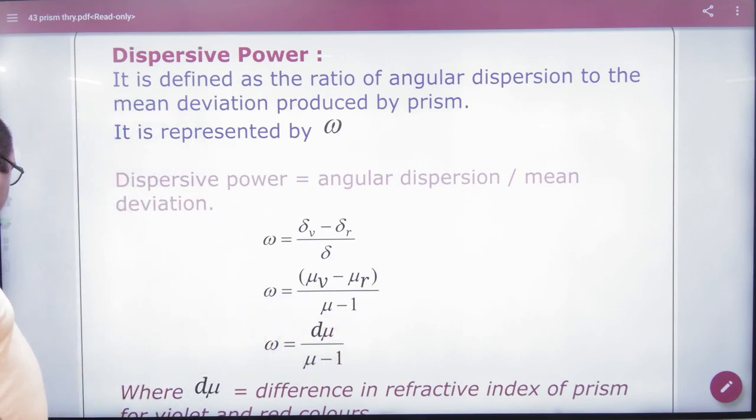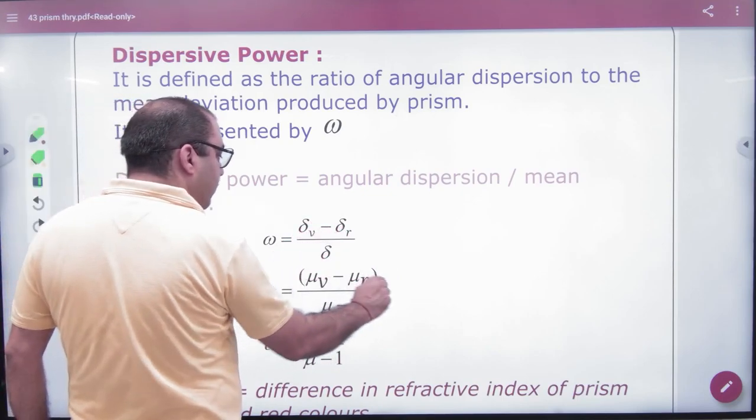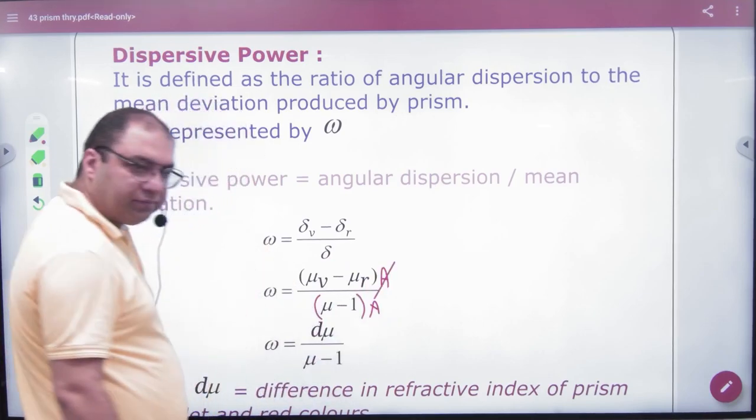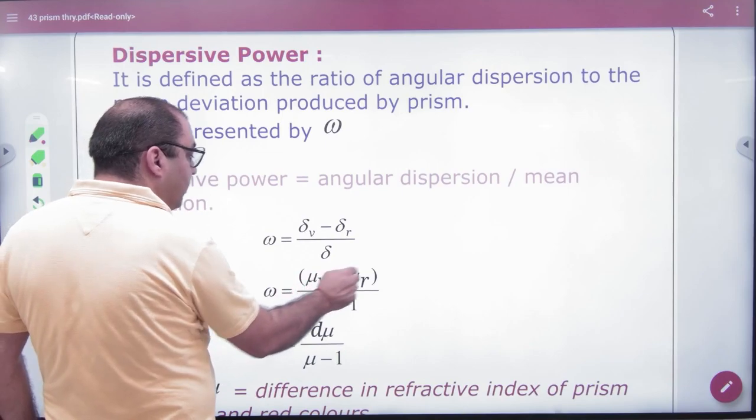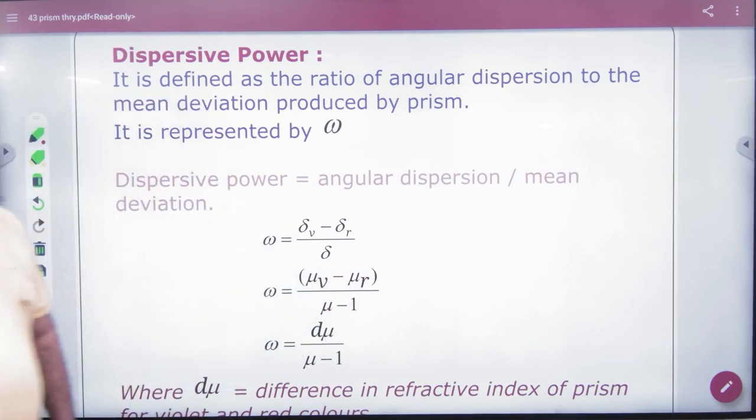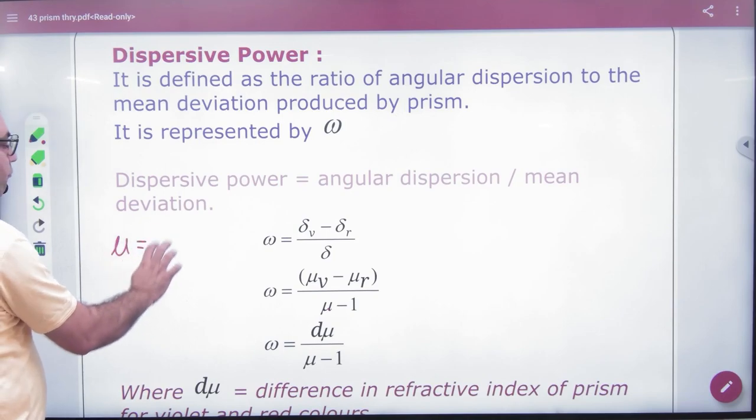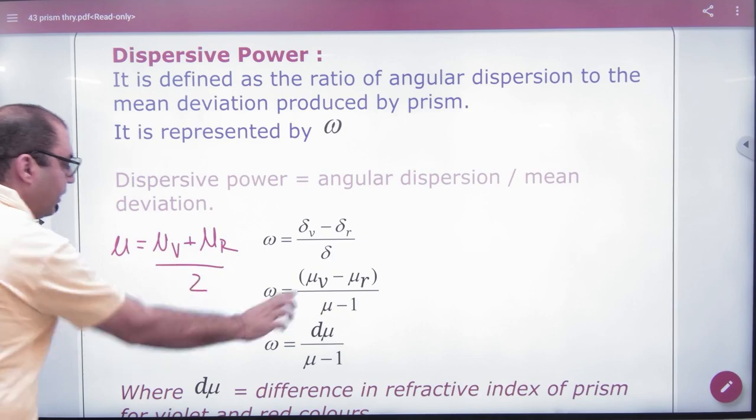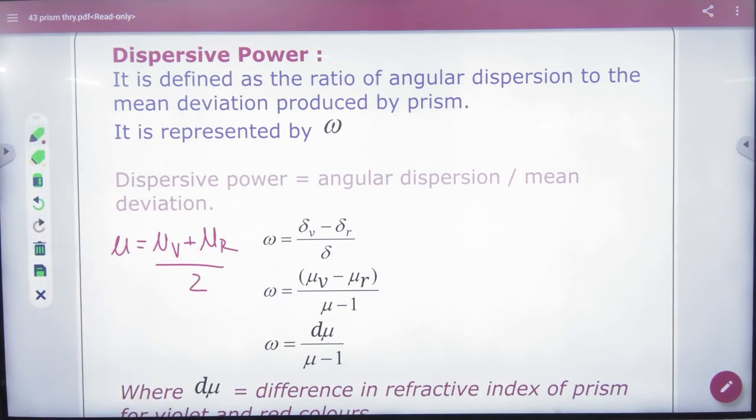Cancel because you can put it here in the denominator. So mu violet, this is mu average. Violet color extreme, red color extreme, divided by 2, and sometimes it corresponds to yellow light.